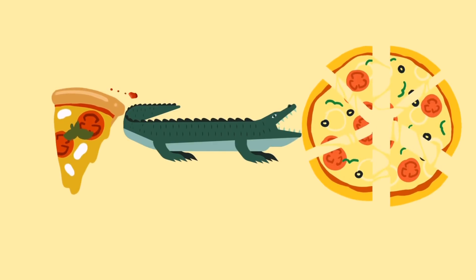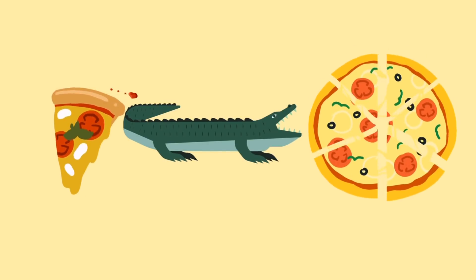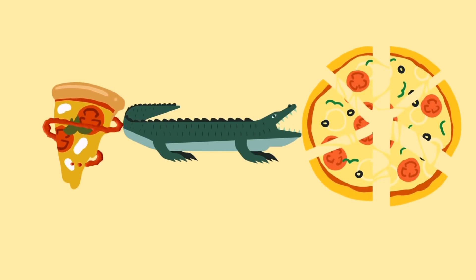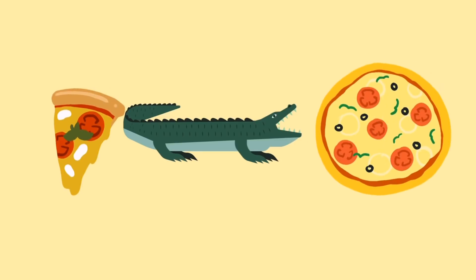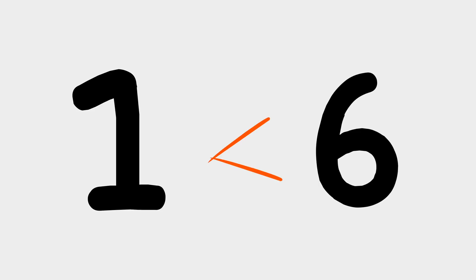This is because six pizza slices are more than just one slice of pizza. We know Mr. Crocodile chose six pizza slices instead of just one because he was really hungry, which means six is more than, or greater than, one.